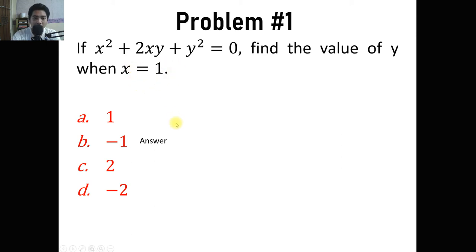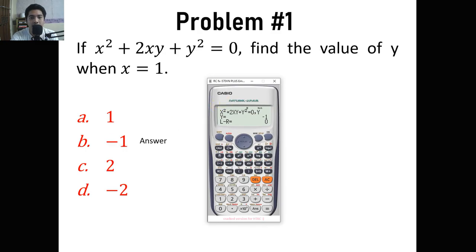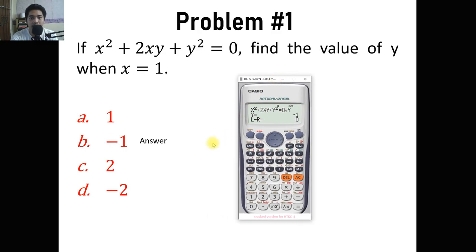We use the comma in order for the calculator to know what variable we are going to calculate. In this case, we needed to find the value of y given that we have the value for the other variable, which is x. We have only four problems here, so this will be a short discussion. Let's try to solve problem number two.